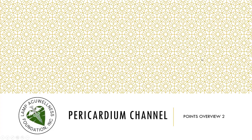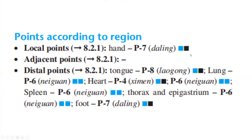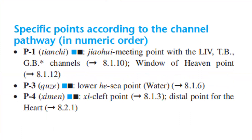Let's discuss the Pericardium Channel Points Overview, Part 2. Points according to region: local points — hand: P7; adjacent points — none. Distal points — tongue: P8; lung: P6; heart: P4; spleen: PC6; thorax and epigastrium: P6; foot: P7.